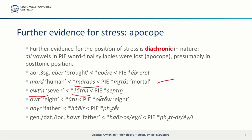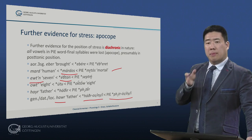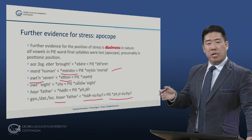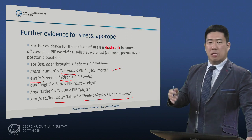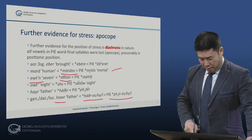If we look at the genitive, dative, and locative of father, we have Proto-Indo-European pachtros, pachtrei, pachtri. The stress shifted to the penultimate syllable, giving us howr. All of this diachronic evidence points to stress being on what, in pre-Armenian terms, was the penultimate syllable, but then after apocope became the final syllable.